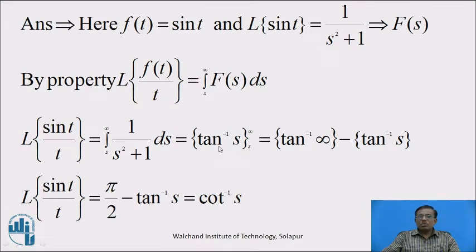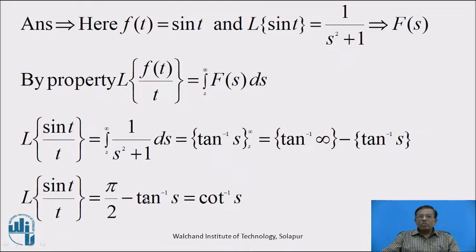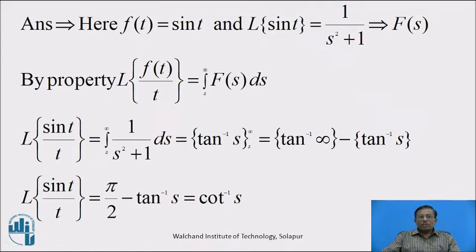Substituting the limits: when s equals the upper limit infinity, we get tan⁻¹(∞), minus when s equals the lower limit s, we get tan⁻¹(s). Therefore, Laplace Transform of sin(t)/t equals tan⁻¹(∞) - tan⁻¹(s) = π/2 - tan⁻¹(s), which equals cot⁻¹(s) by the identity from inverse trigonometric functions. This is the required answer.